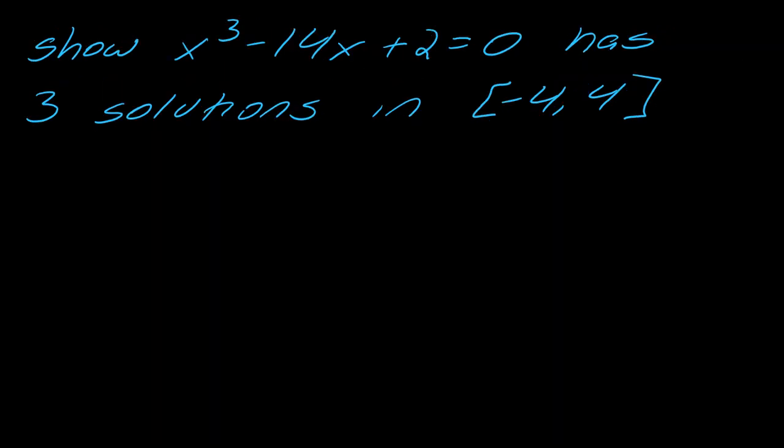And here's the other type of question that kind of comes up with the intermediate value property. So show that this equation has three solutions in this closed interval. So basically what we want to do is we want to think about, so we want to actually kind of go in pieces here.